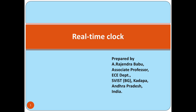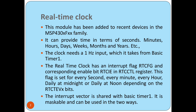Timers are used for providing time intervals and measuring time for a particular operation. The real-time clock is a little different when compared to normal timers. The real-time clock measures time in terms of seconds, minutes, hours, days, weeks, months, and years.